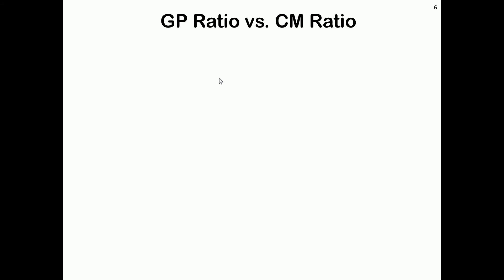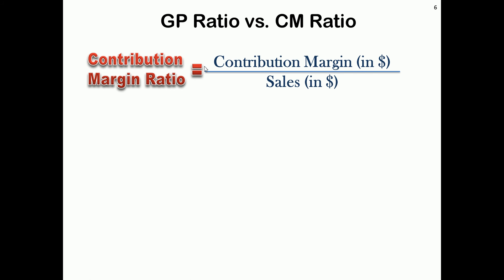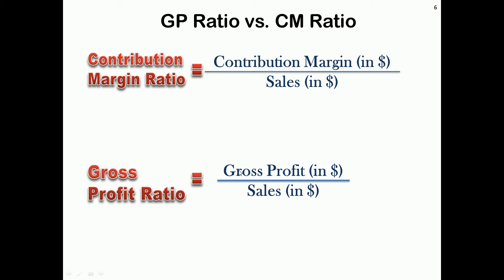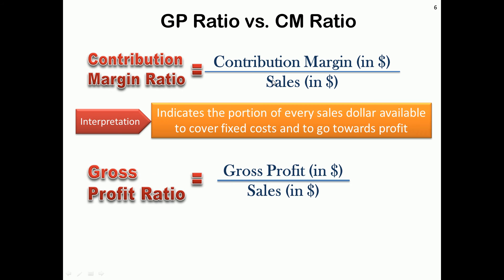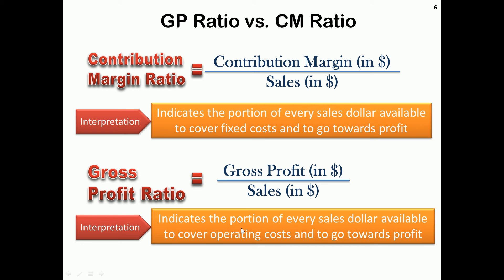The two ratios carry a lot of weight and will be used throughout this course. The gross profit ratio, which you should be familiar with from financial accounting, is calculated by taking the dollar amount of gross profit and dividing it by sales. The contribution margin ratio parallels that — we take the contribution margin dollar amount and divide it by sales. The contribution margin ratio indicates the portion of every sales dollar available to cover fixed costs and to go towards profit, while the gross profit ratio indicates the portion of every sales dollar available to cover operating expenses and to contribute towards profit.